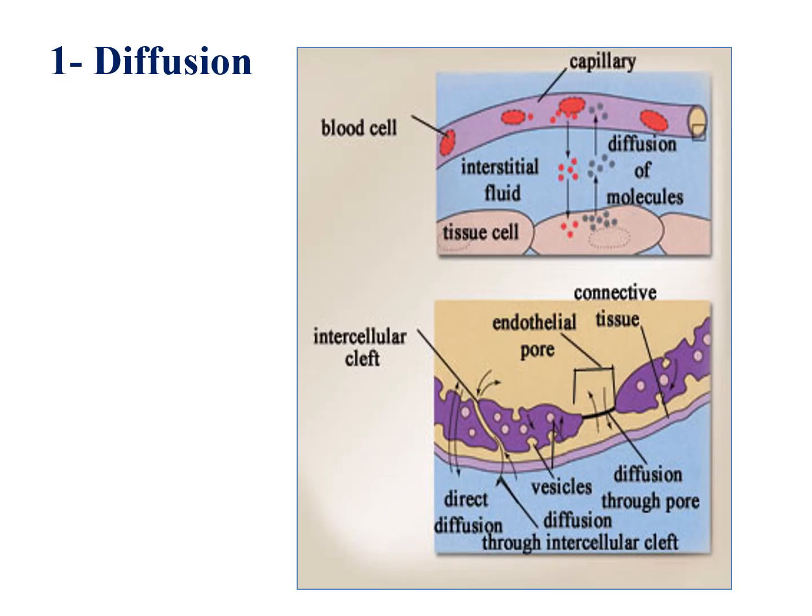Starting with diffusion, it is an important mechanism for exchange across the capillary wall. The rate of diffusion depends on capillary permeability, which depends on the type of capillary, and on factors related to the substance itself — namely the concentration gradient. The more the concentration gradient, the more the rate of diffusion, so they are directly proportional. Other factors include lipid solubility — the more lipid soluble a substance, the greater its rate of diffusion — and molecular size: the smaller the size of the water-soluble substance, the greater its rate of diffusion.